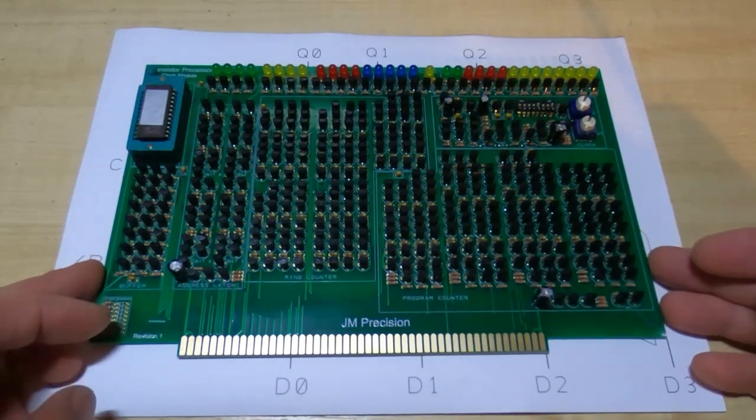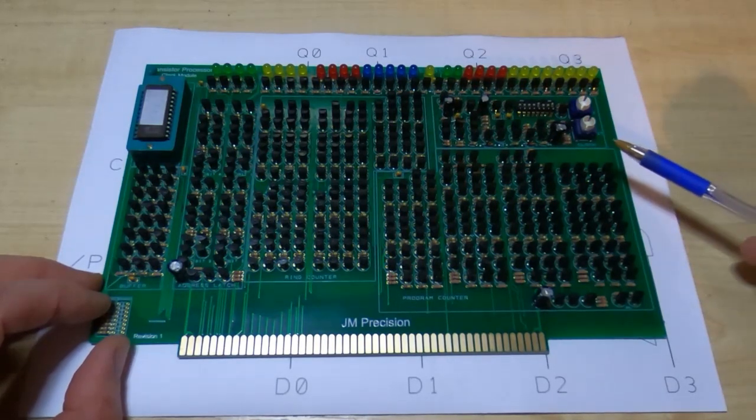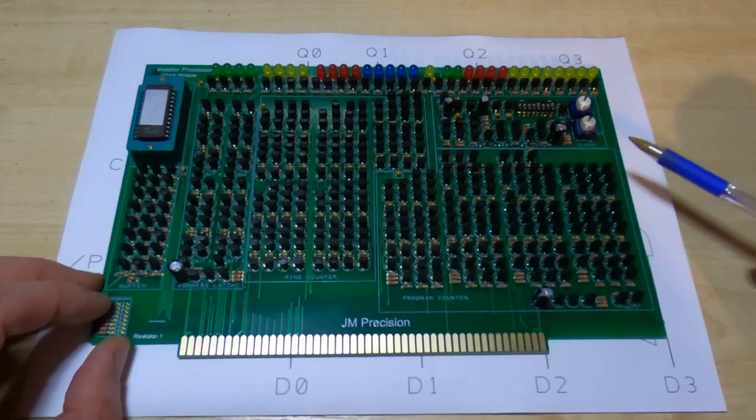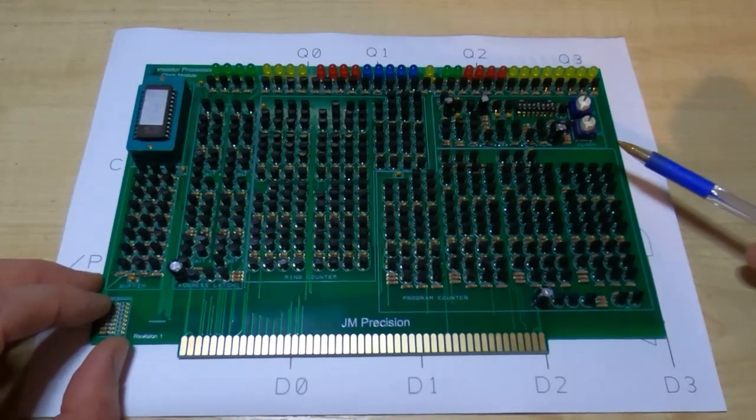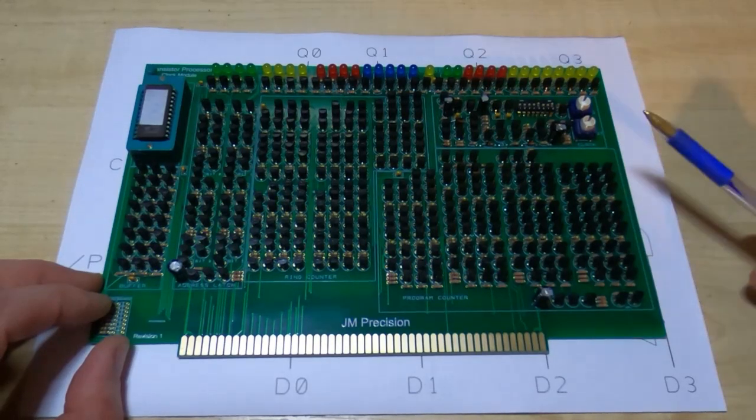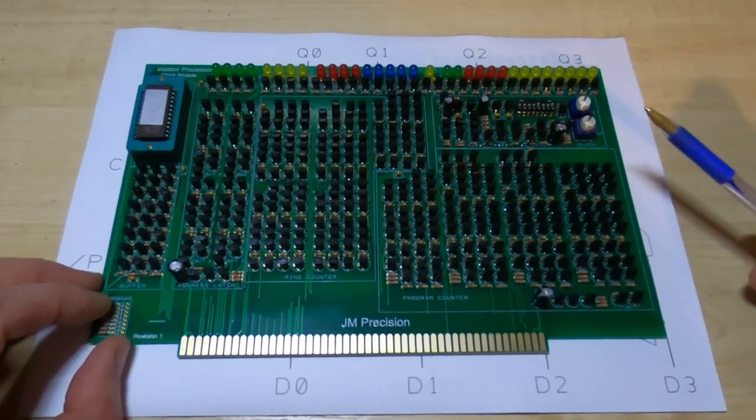So the main reason for needing to change the design of the program counter are because in the original design the processor did not support jumps at all, either simple jumps or conditional jumps. The program counter just counted starting at zero counting up until it got to either a halt instruction where it stopped or until it was reset back to zero or until it wrapped around back to zero.